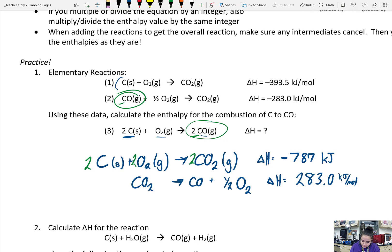So for this one, I'm going to multiply it by 2. So I'm going to multiply the whole reaction by 2. 2 times a half is 1, so we can get rid of it there. And then I'm going to multiply that number by 2. 283 times 2, and I get 566. So I flipped the reaction, I flipped the sign, I multiplied it by 2, I multiplied that number by 2.